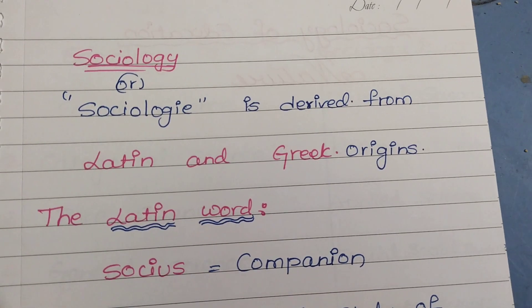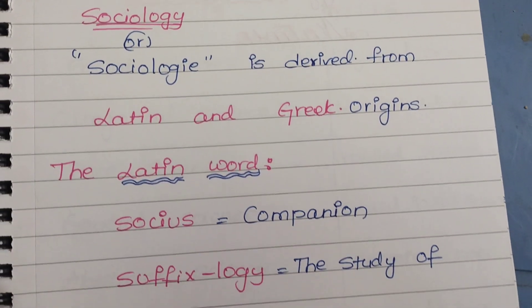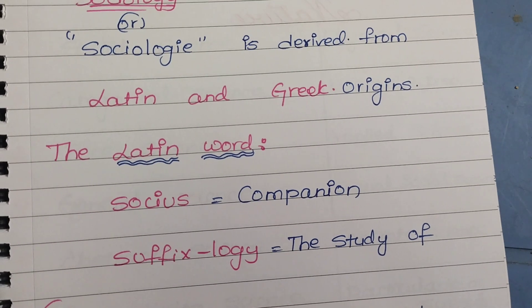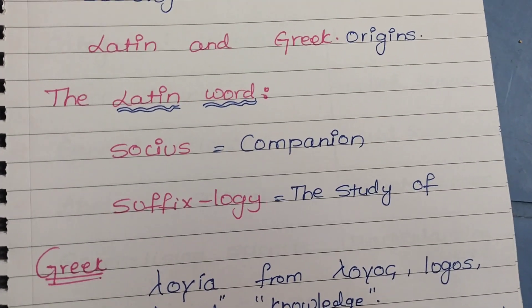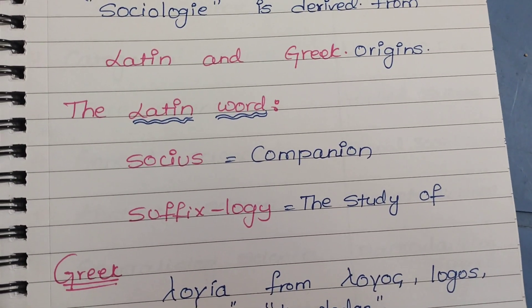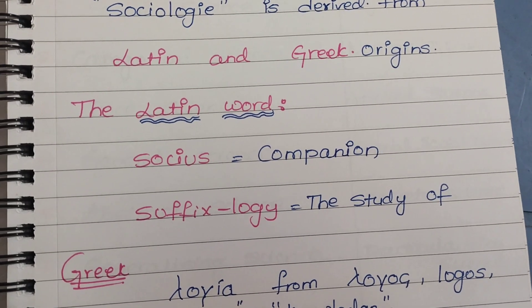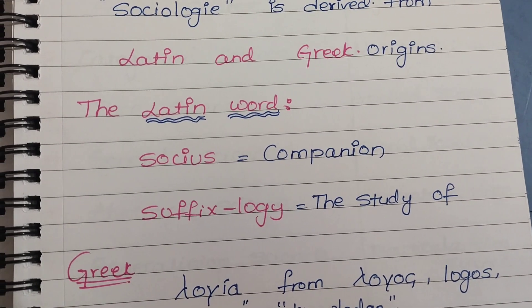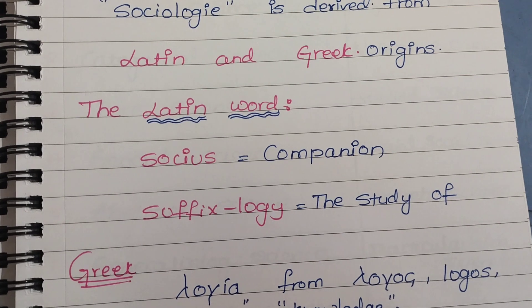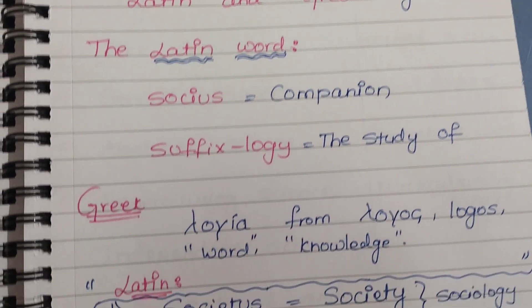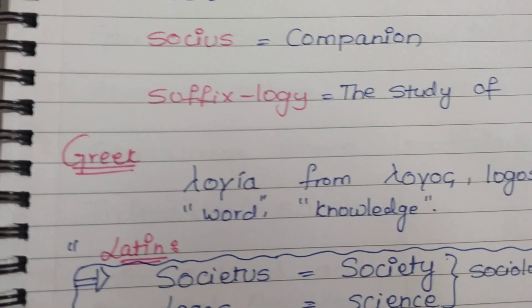Sociology is derived from Latin and Greek origins. The Latin word socius means companion, and the suffix logi means the study of companionship.